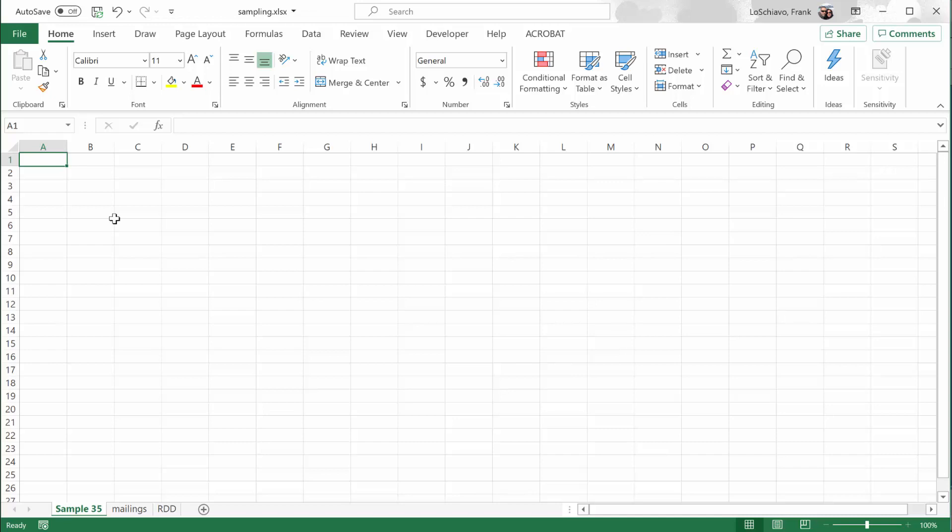So in Excel, we can use functions to randomly select numbers. And there's a function called random between, Rand between, and it will randomly pick a number between some low value and a high value. Let me show you how to use that function.